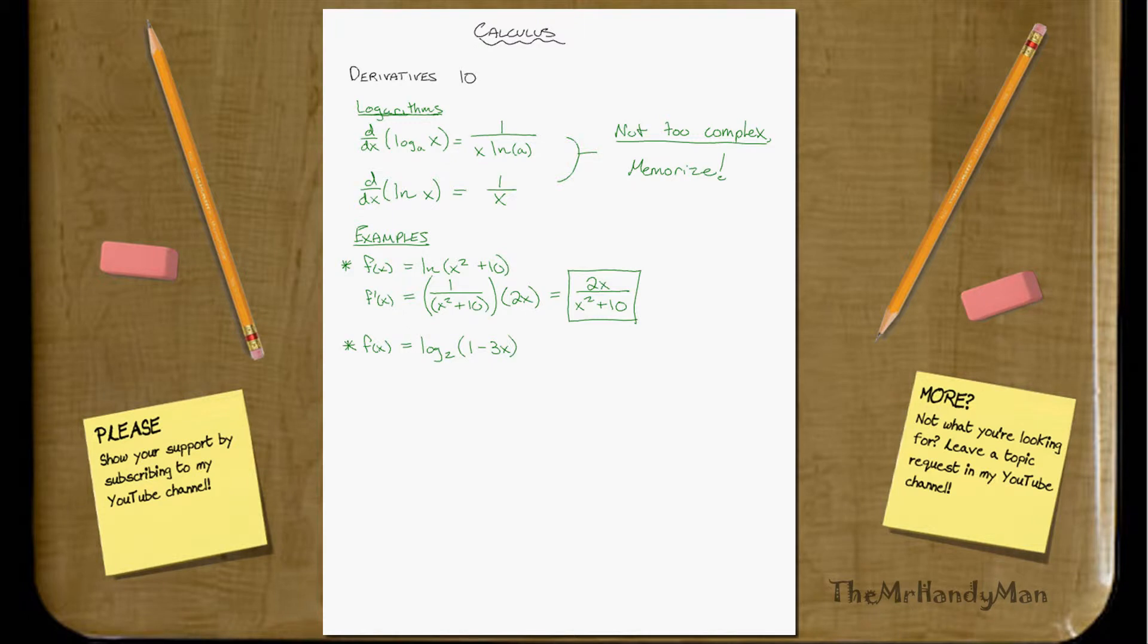So, F prime of X equals 1 over, now, what is it? You have your X, right? You're following this function up at the top. So, what's your X? Your X is 1 minus 3X, right? So, let's put that out there first, just like the function says. Then, LN of 2.